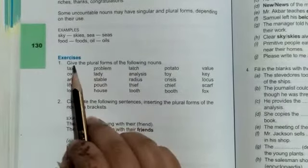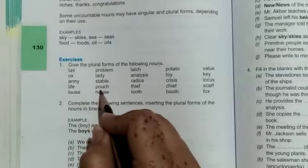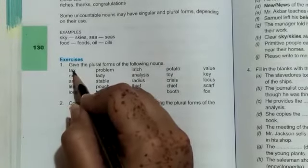The first statement is give the plural forms of the following nouns. Now here we are provided with the nouns and we have to give the plural forms of these nouns. So very first one is tax, its plural form is taxes.